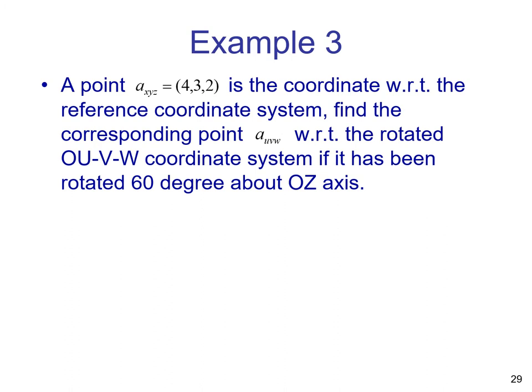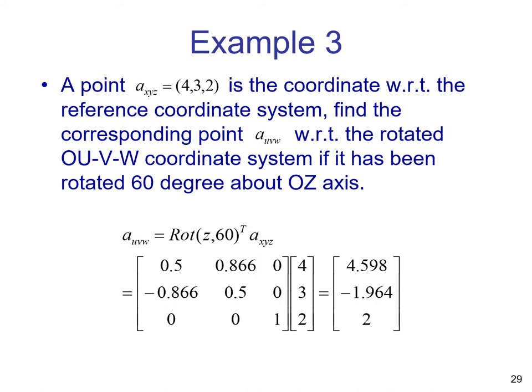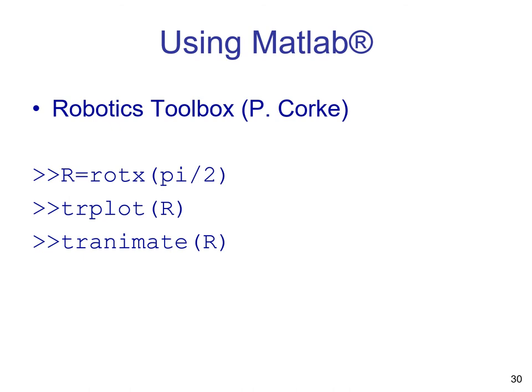Now consider the problem in which we have coordinates in XYZ frame — the reference coordinate system — and what we want is to find the corresponding point A in UBW with respect to the rotated UBW coordinate system, again considering 60 degrees about Z axis. Here we use the transpose of the rotation matrix, because now what is given is coordinates in XYZ frame — the reference frame. Using the transpose, the answer is easily found.